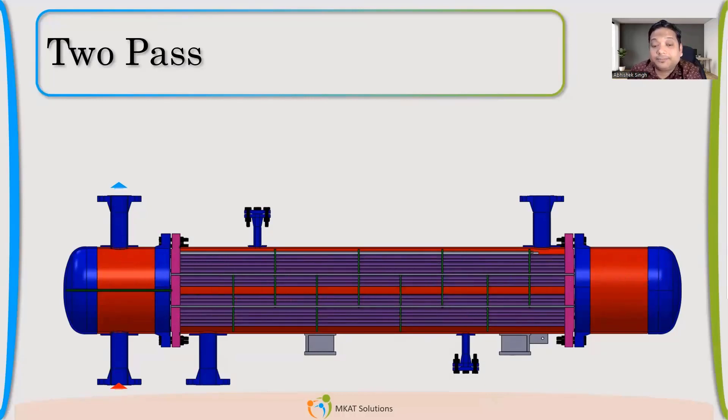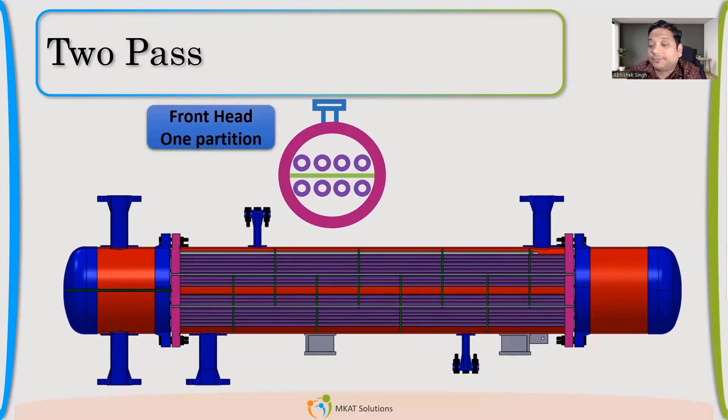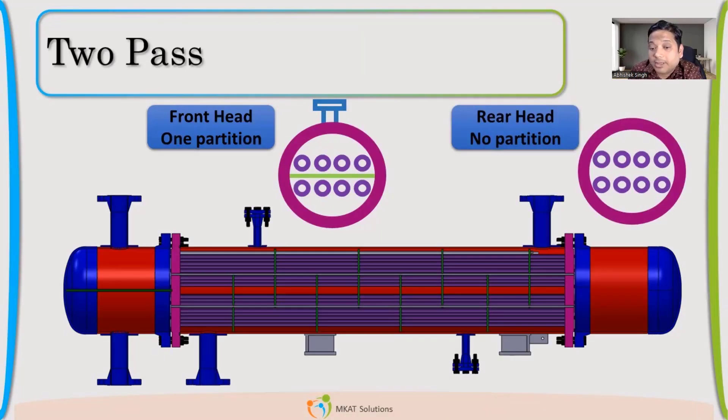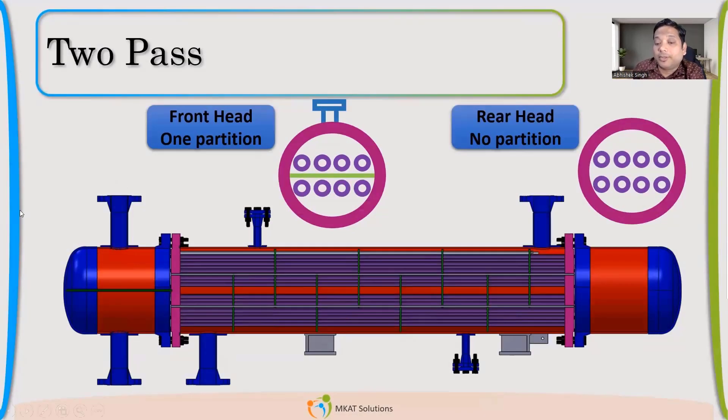How will be the construction? This is the front side tube sheet. We'll just divide. Let us assume there are eight tubes. So we'll divide in two. In the first four, there will be inlet. All the fluid will be going inside from this. And then it will come out from the other side. There is no pass partition in the rear side. So it will enter in the next four and then come out from this side. So this is how it will flow in two pass.